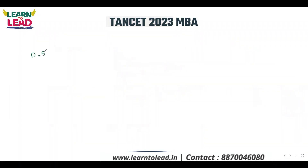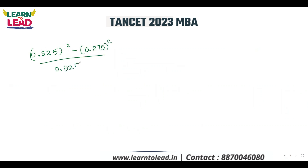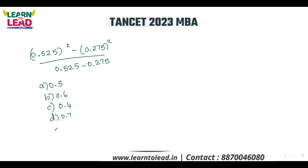Find the value of 0.525 squared minus 0.275 squared, divided by 0.525 minus 0.275. Option A: 0.5, Option B: 0.6, Option C: 0.4, Option D: 0.7, Option E: 0.8.